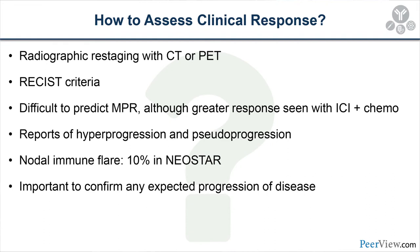Once patients safely complete neoadjuvant treatment, how do we assess clinical response? Radiographic restaging with CT or PET has been commonly used in all major trials. RECIST criteria have not been particularly useful in determining response to immunotherapy. It's quite difficult to predict major pathologic response from imaging, and there are reports of hyperprogression or pseudoprogression that make reassessment challenging — particularly the concept of 'nodal immune flare' introduced by investigators in the NEOSTAR trial.